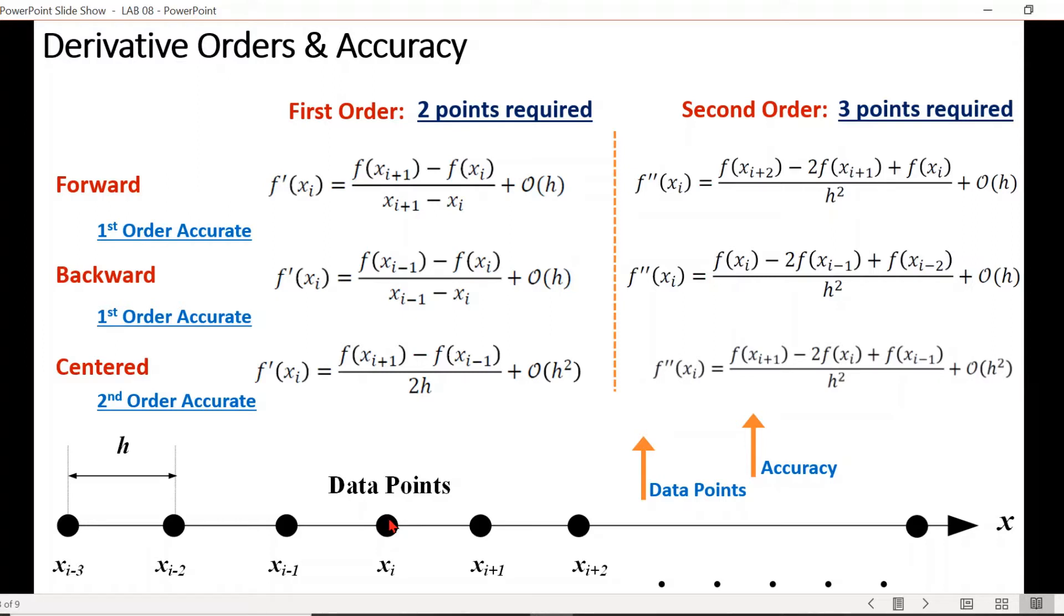For example, if we want to evaluate the derivative at data point xi, for forward difference scheme for second derivative we need to know two points ahead of this xi. Similarly for backward scheme we require two consecutive points behind this xi. And for a center difference we see that this xi point where we want to evaluate the second order derivative lies in between i plus one and i minus one.